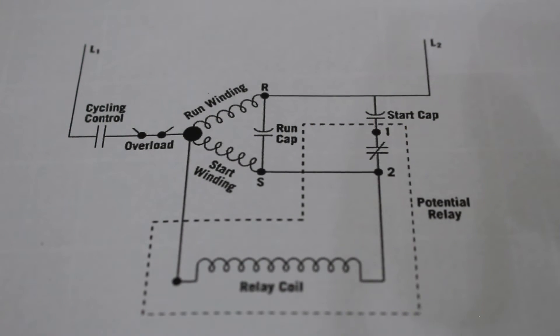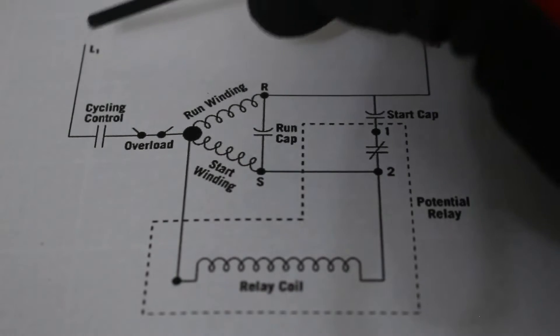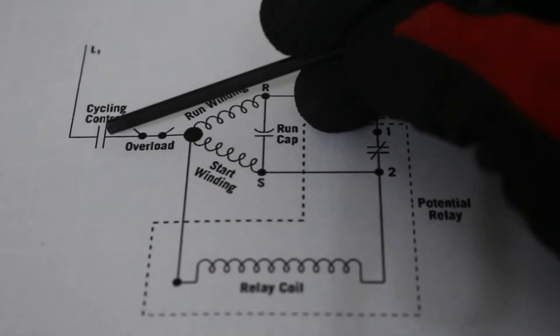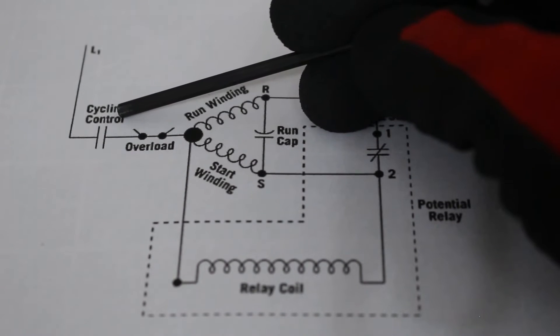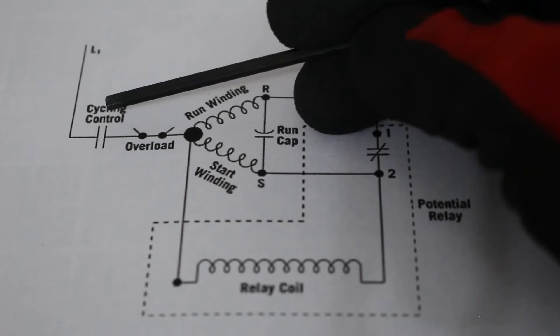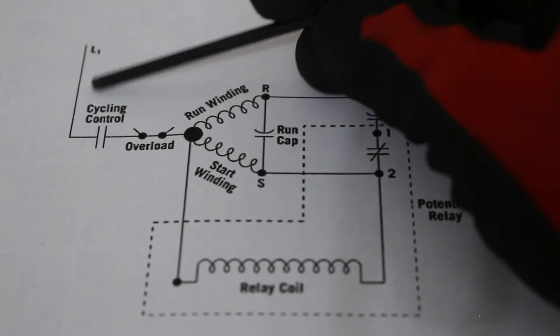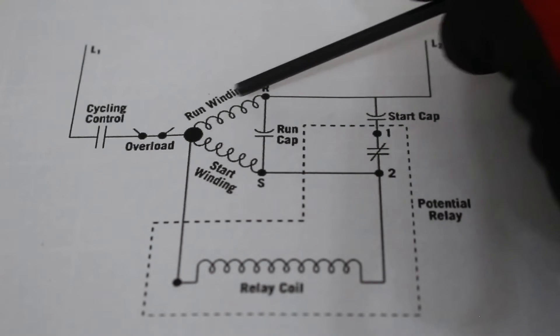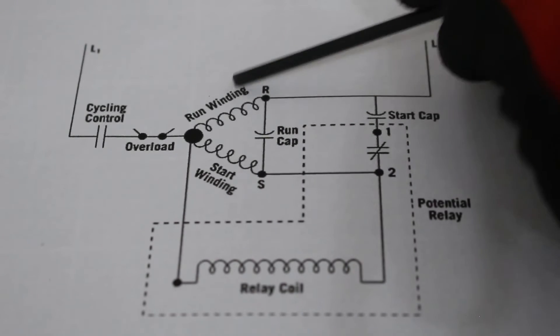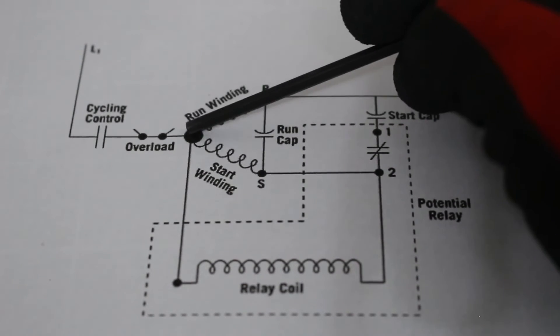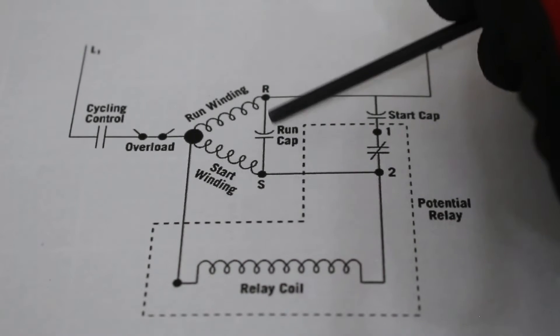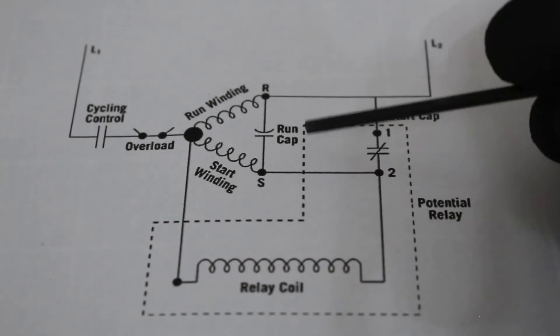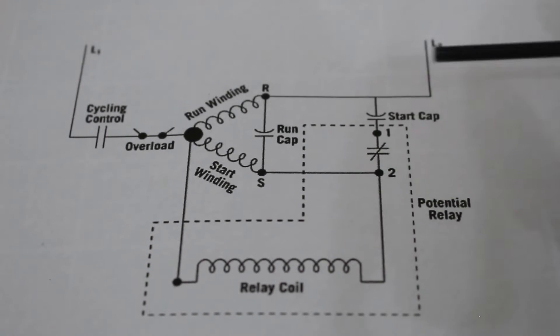Let's begin by going over exactly what we have here, and what we're looking at. Here is line 1 coming in, and here is line 2. Here we have normally open contacts, and it's going to be our cycling control. To keep things simple, let's just say this is our thermostat. Power comes in, goes into our overload, which is for our compressor. This right here is our compressor. This is our common point. Run winding, start winding. We have a run cap, and we have a start cap. In these dotted lines, this is our potential relay.